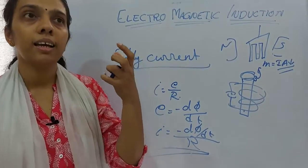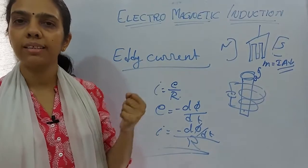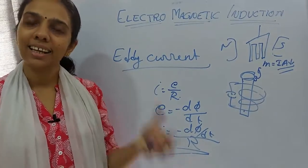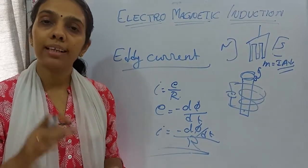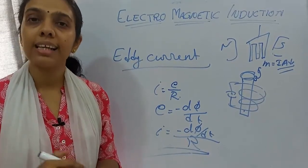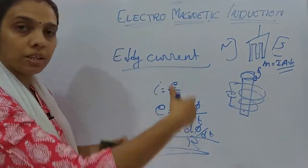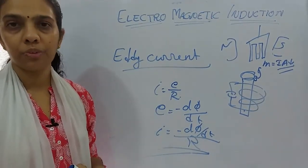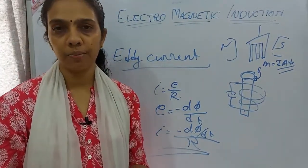Electromagnetic damping has useful applications. In electric trains, when the brakes are applied, a large magnetic field develops across the rails and wheels. This creates an opposing force that helps the train stop. So eddy currents can be a very useful phenomenon.